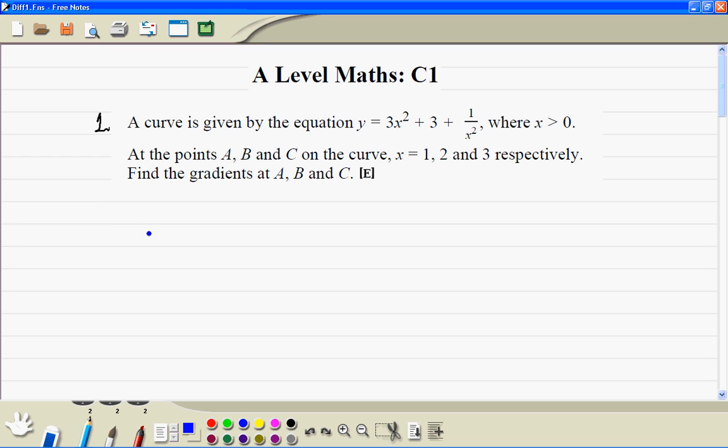So let's do question 1. Y is equal to 3x squared plus 3 plus, now if you have 1 over x squared, you take the x squared to the top and the power becomes negative.